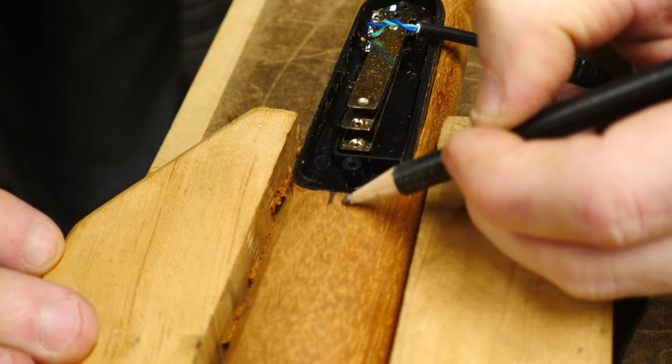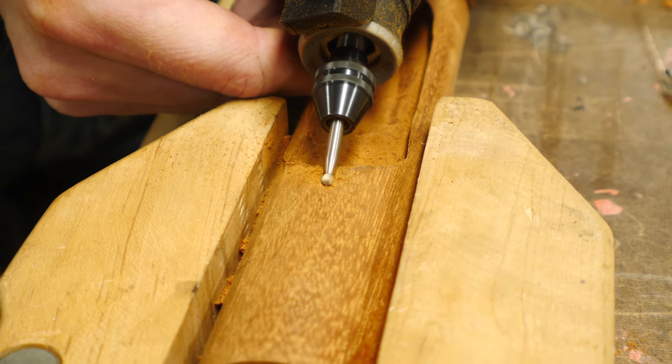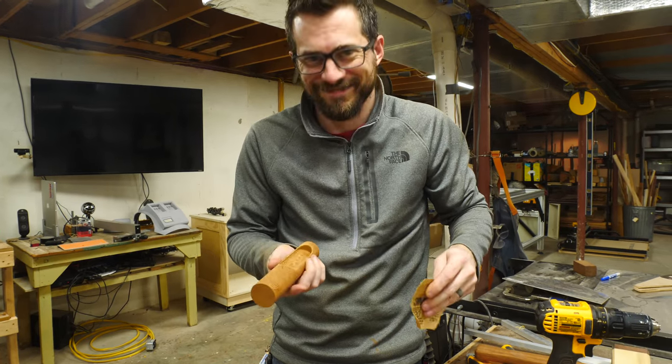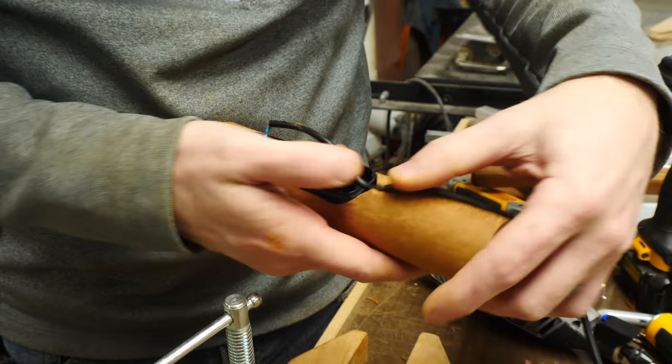I made a small mark at the top where the wire needed to come out and used a ball nose bit to make a little channel for it to fit through.